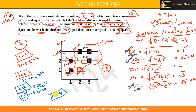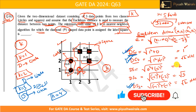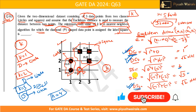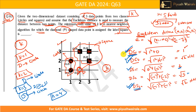When k = 4, the four nearest neighbors are DC1, DC2, DS3 (distances 1 and sqrt(2)), and then DS1 with distance 2 — since sqrt(5) > 2. That gives 2 circle points and 2 square points — a tie again, so we still cannot classify D as square.